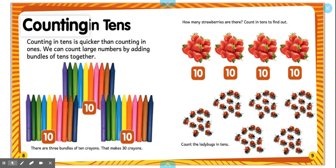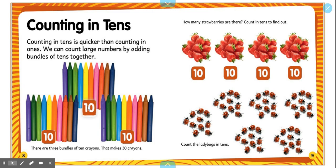This section says counting in tens. Counting in tens is quicker than counting in ones. We can count large numbers by adding bundles of tens together. Ten, twenty, thirty. There are three bundles of ten crayons. That makes thirty crayons. How many strawberries are there? Counting in tens to find out.